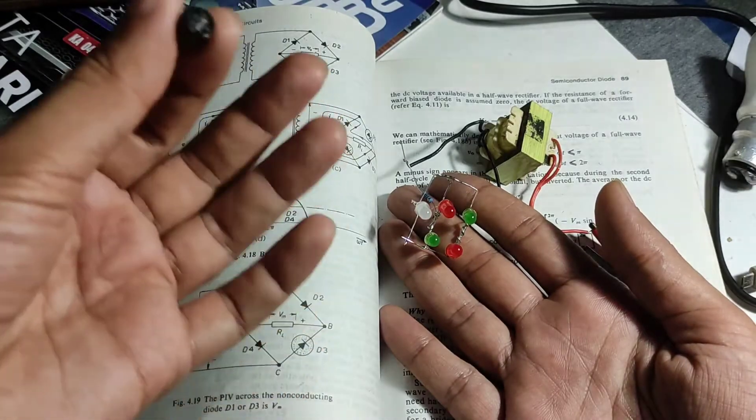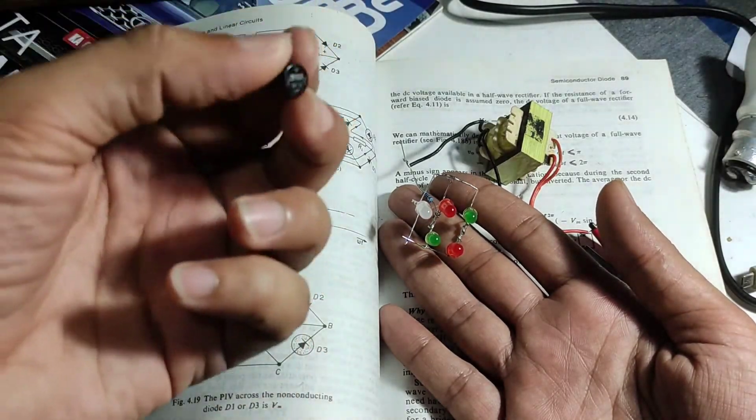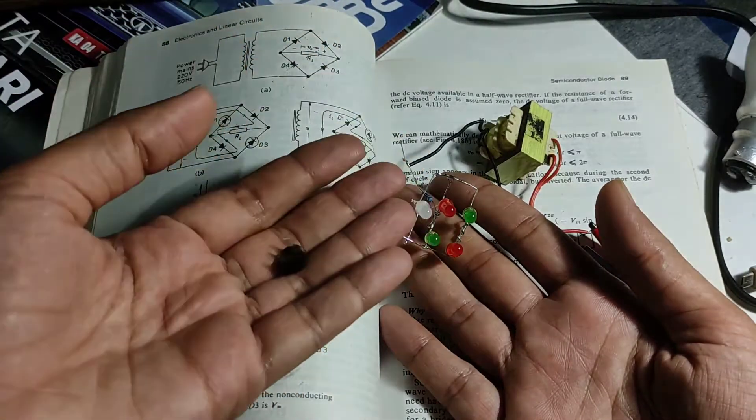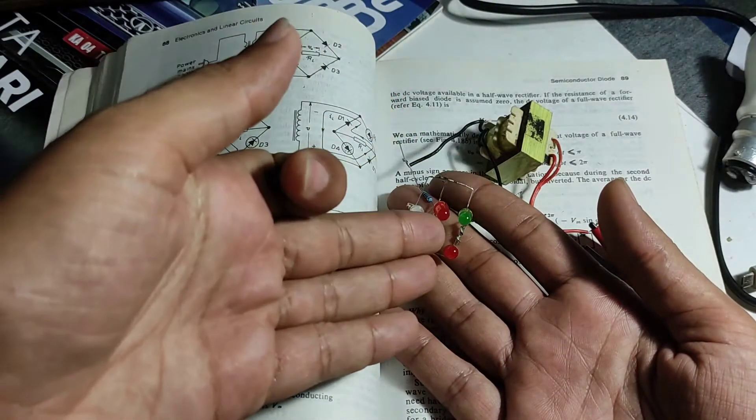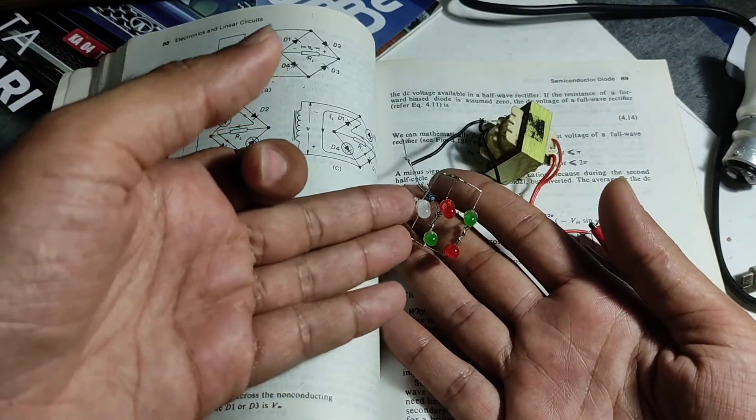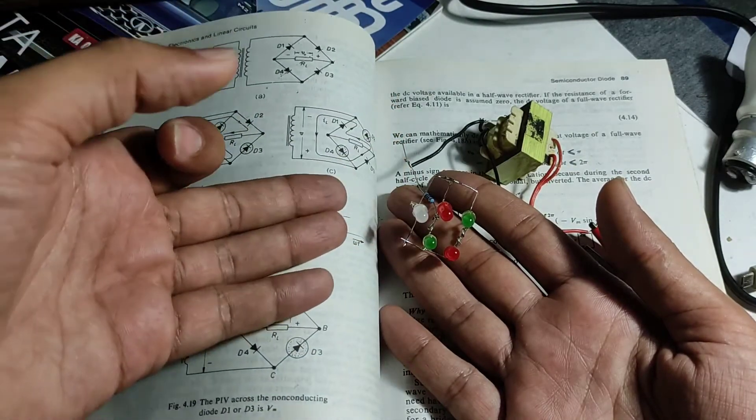In typical full bridge rectifiers or silicon diodes, they dissipate it in the form of heat. In here, they dissipate it in the form of light - hence we can see what is happening inside it.